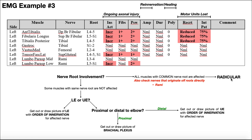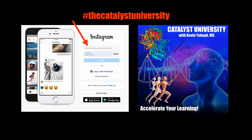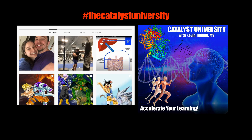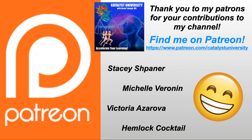And so that is our final answer here. I hope that this video furthered your understanding about using EMG data to figure out where a nerve problem is. Thanks for tuning in. Please like, subscribe, and check out my Instagram for cool science and not-science stuff. And a big thank you to my patrons on Patreon for your contributions to my channel.